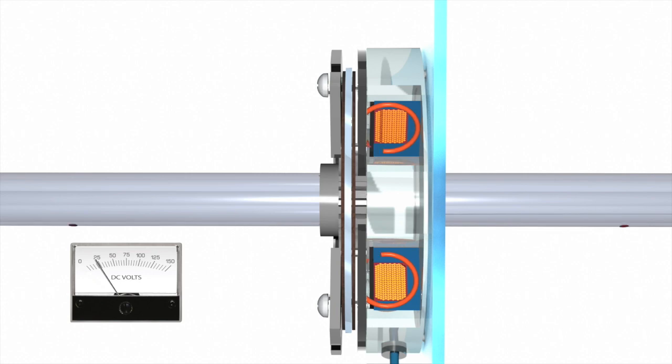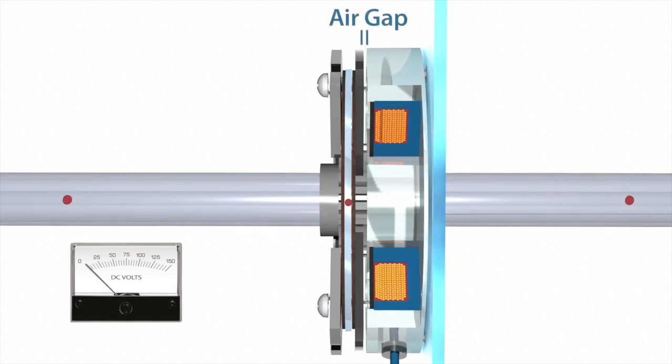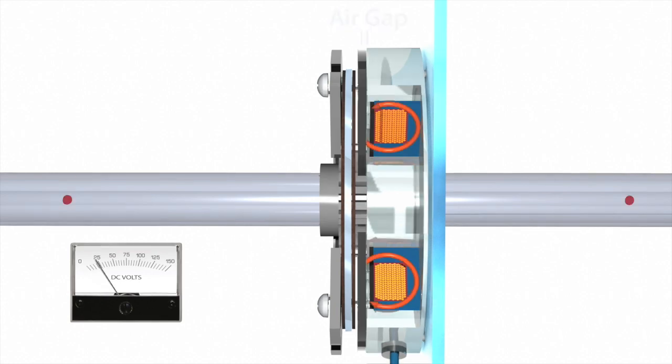When power is removed from the coil, the pressure plate is released and the springs push the pressure plate against the friction disc, trapping it between the pressure plate and the outer brake cover plate. Since the hub is attached to the friction disc, the hub and the shaft going through the hub are either dynamically stopped or held in place.